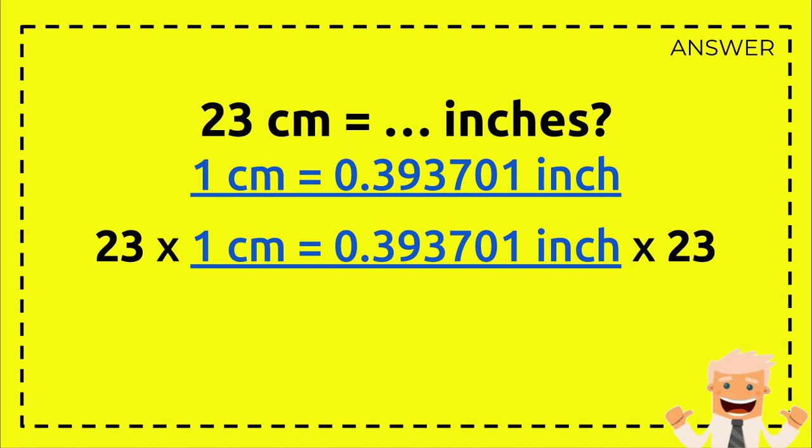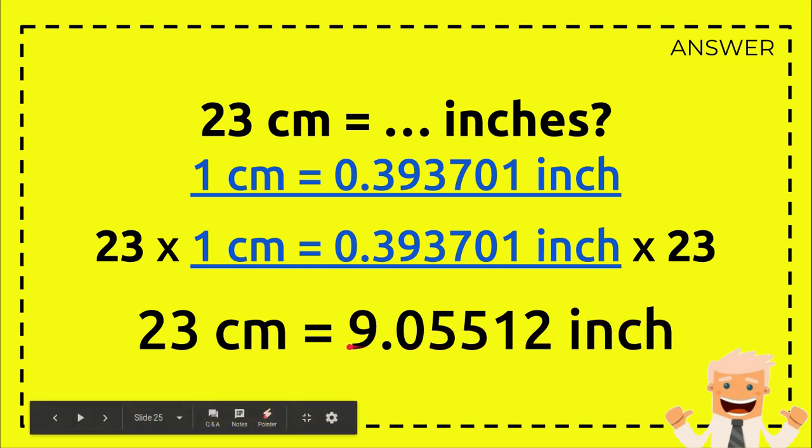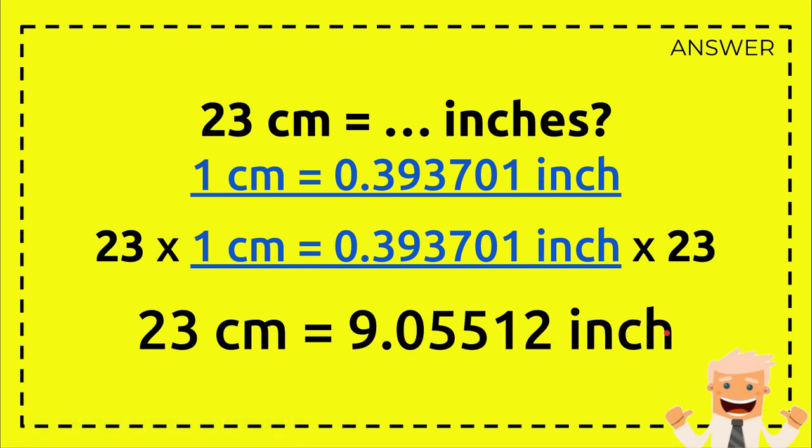Let's continue to answer this question. 23 times 1 centimeter equals 23 centimeters, and 0.393701 inch times 23 equals 9.05512 inches. So this is the answer.